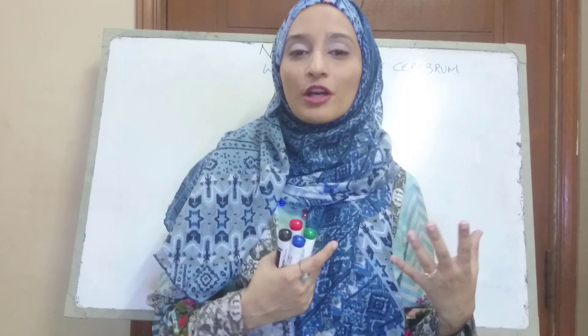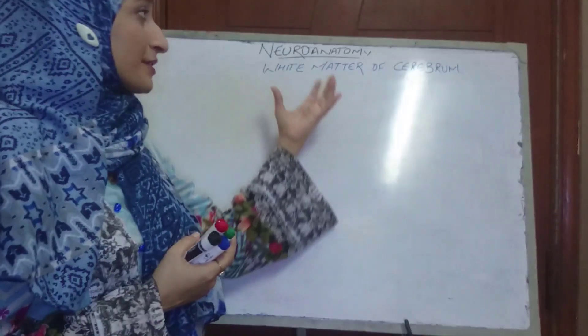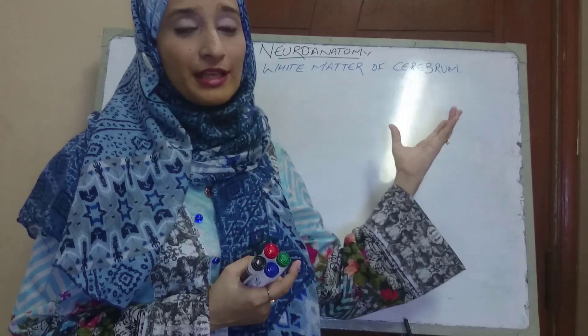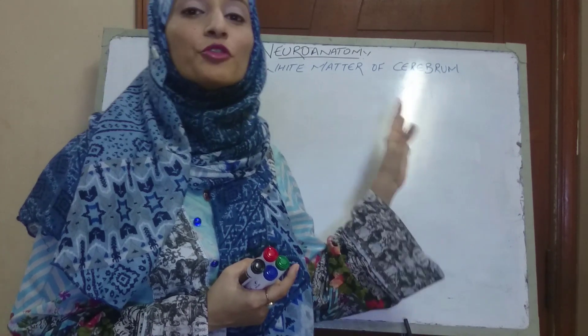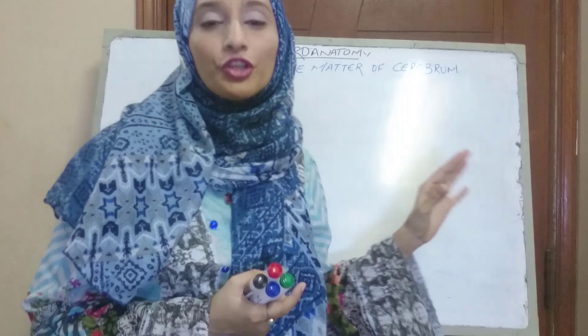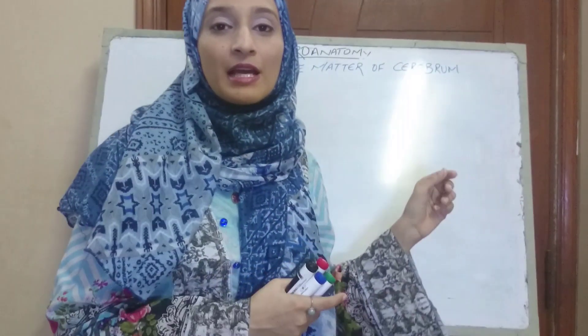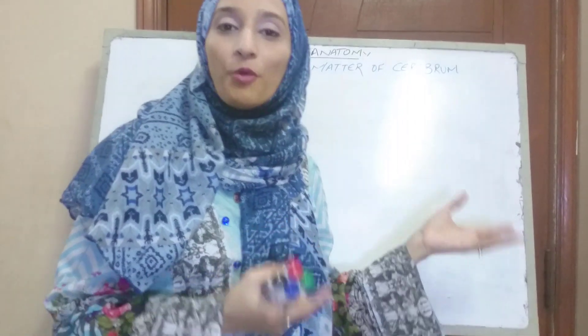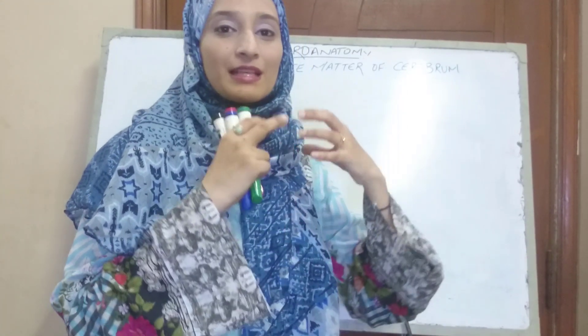We are going to talk about the different white matters according to their functions and locations. The nerve fibers included in the white matter are mostly myelinated. White matter is a term used not only for the nerve fibers but also for the supporting cells — for example, neuroglia. So white matter is basically a general term for nerve fibers and their supporting cells.